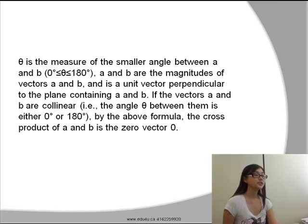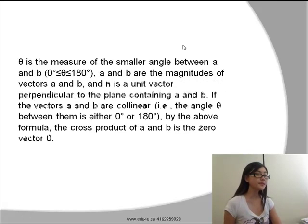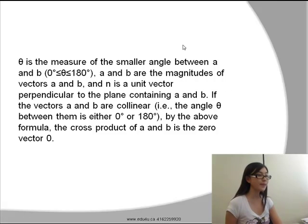Theta is the measure of the smallest angle between the two vectors A and B, such that it is between 0 and 180 degrees. The A and B on the right side of the equation are magnitudes of the two vectors, and N is a unit vector perpendicular to the plane containing A and B.